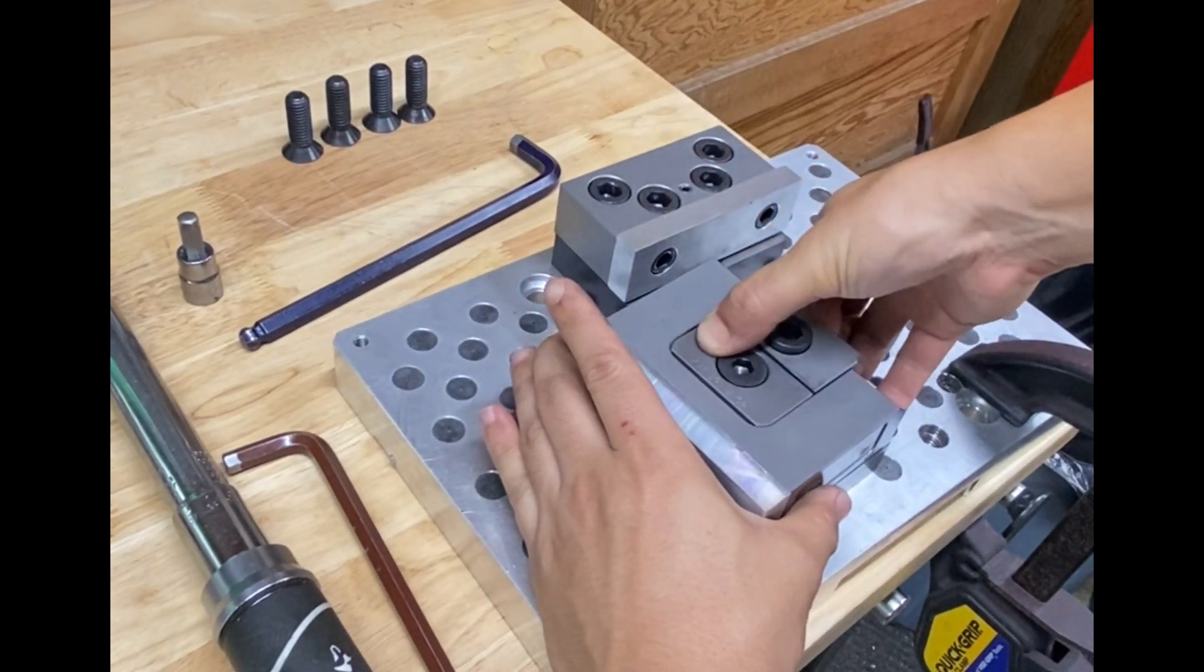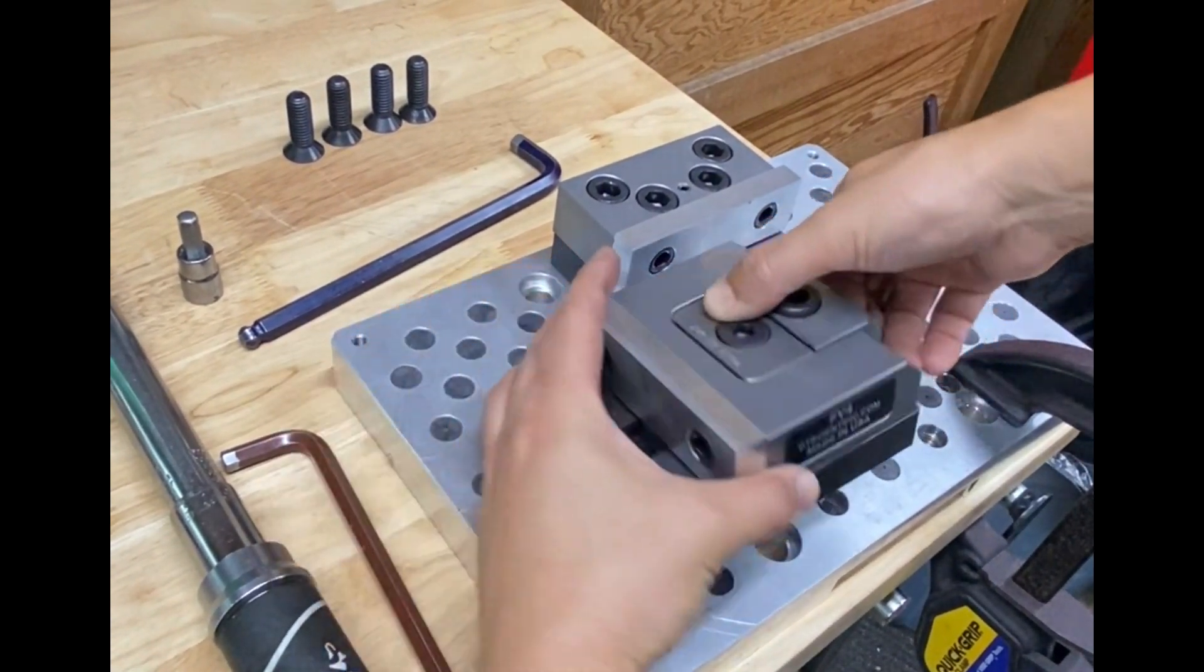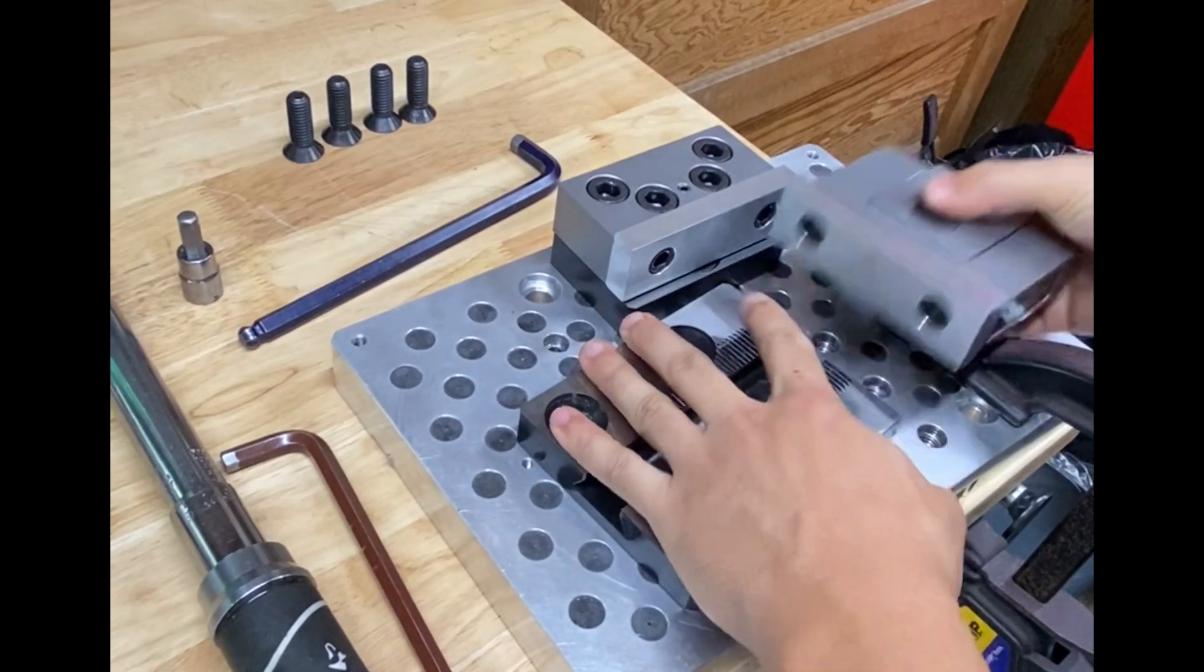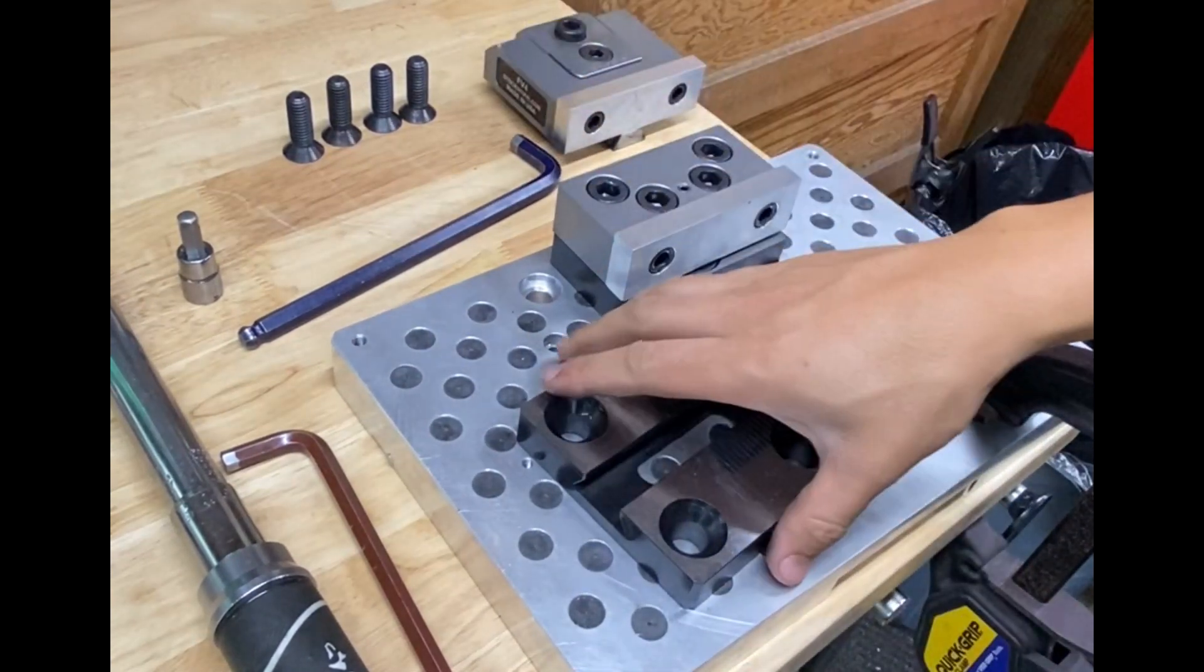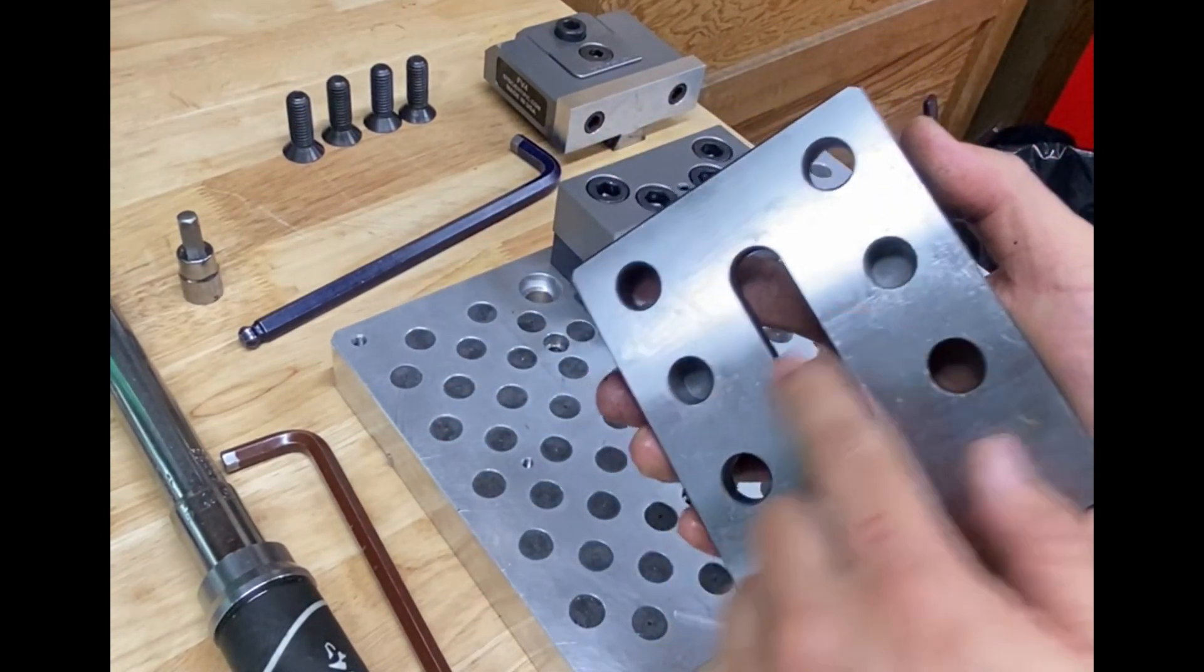You press down on the wedge, it kind of lifts up the jaw like that, so it makes it a lot easier to slide it out. On the bottom of the base there are these two dowel pin holes, and this was just a suggestion by a beta tester.